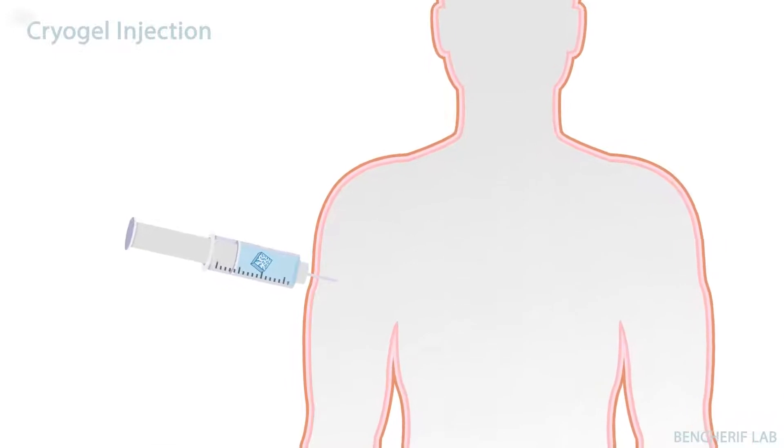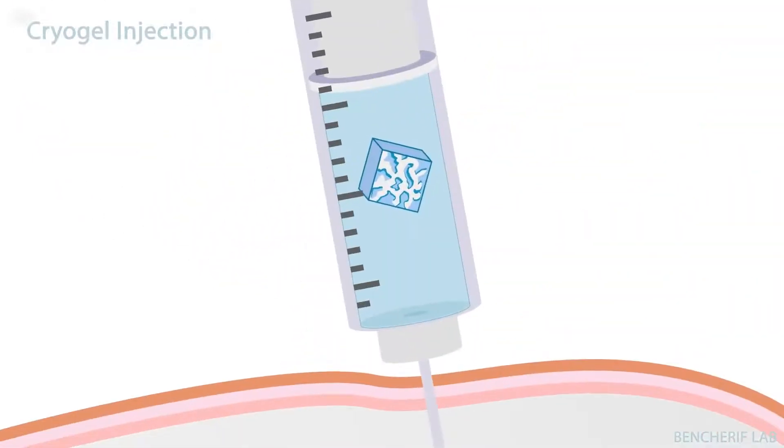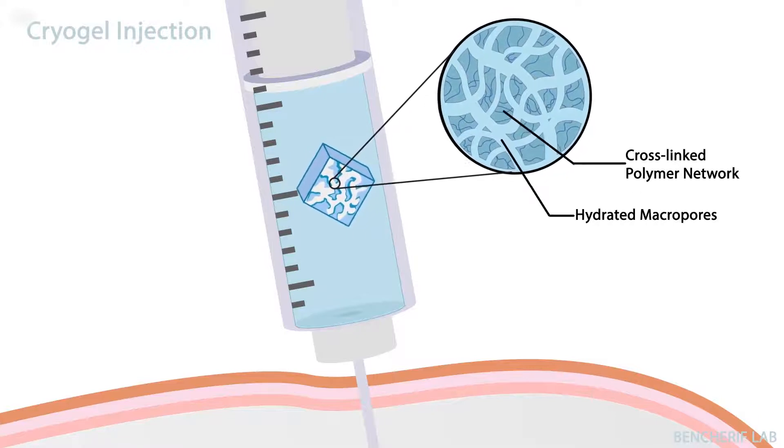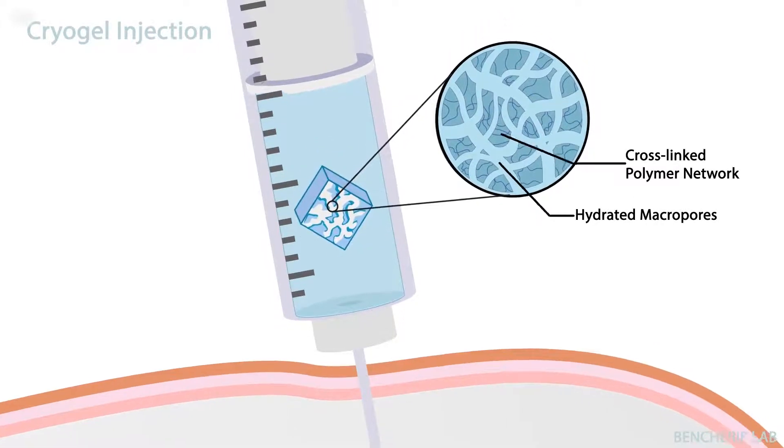They're typically injected subcutaneously. During the injection process, free water is quickly expelled from the cryogel and the polymer network reversibly collapses to a tiny fraction of its original size.